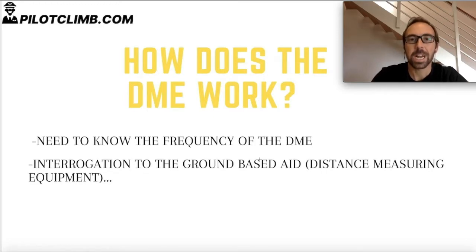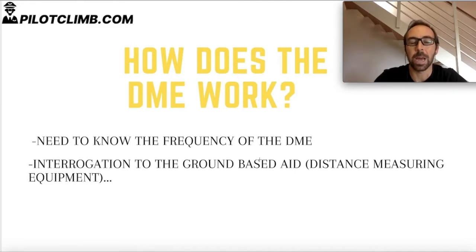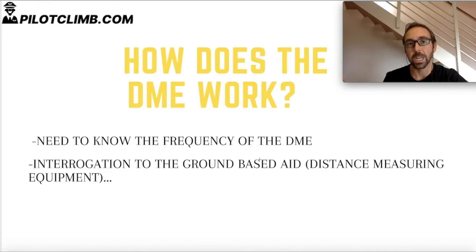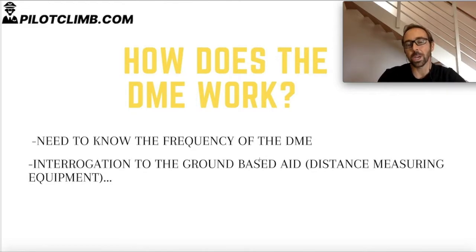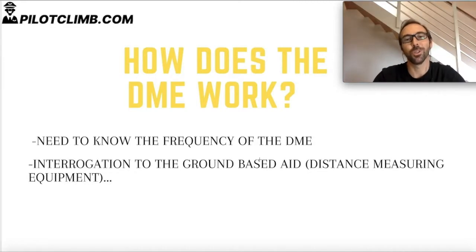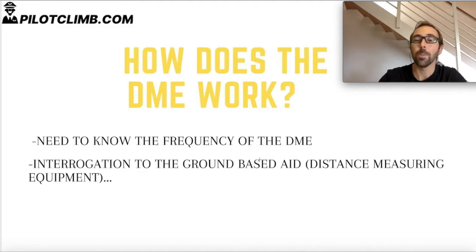The DME system works like this: the aircraft sends an interrogation to the ground DME station, and the ground station sends back a reply. The aircraft knows that for each unit of time elapsed between the interrogation and the reply, there corresponds an exact unit of distance. For example, let's say one second of delay equals one nautical mile. If the aircraft sends the interrogation and receives the reply after ten seconds, then the aircraft is ten nautical miles away. These are made-up numbers to illustrate the concept.